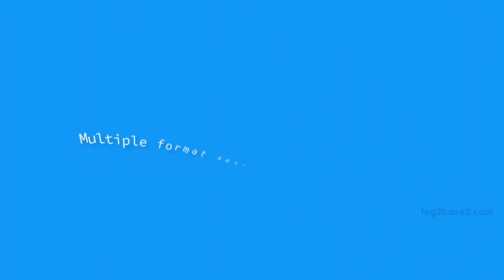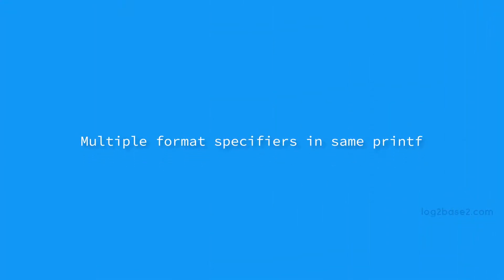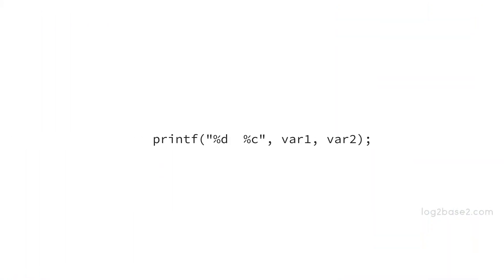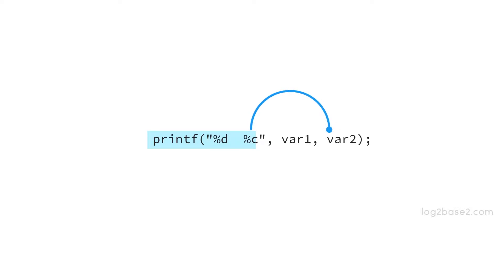Now, we can use many format specifiers in the same printf function. If the printf function encounters a format specifier for the first time, it will take the first variable after the comma and print it. So for %d, the first variable var1 will be taken. Next time, if it sees another format specifier, it will take the second variable after the comma and print it. So for %c, var2 will be taken, and this will continue.